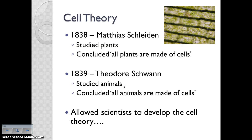Schleiden and Schwann were friends. Basically over tea one day they were discussing their work, and they said, what can we conclude about all cells? That led them to develop the cell theory. You're going to have to remember what Schleiden and Schwann did. The easiest way to remember is that Schwann sounds like swan, and swan is an animal — so Schwann studied animals. Schleiden studied plants.